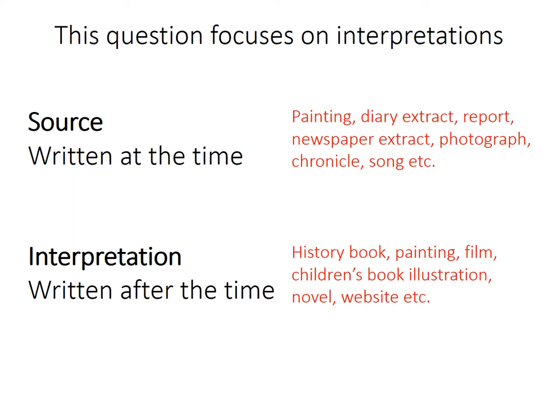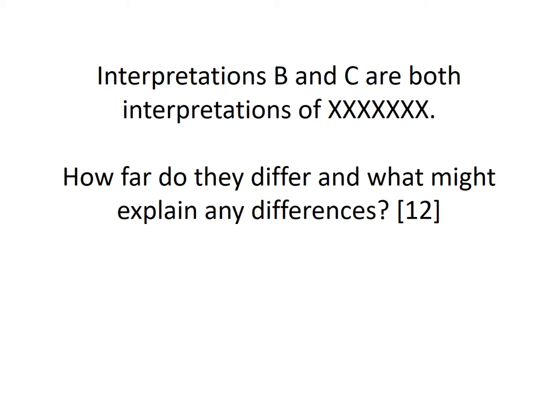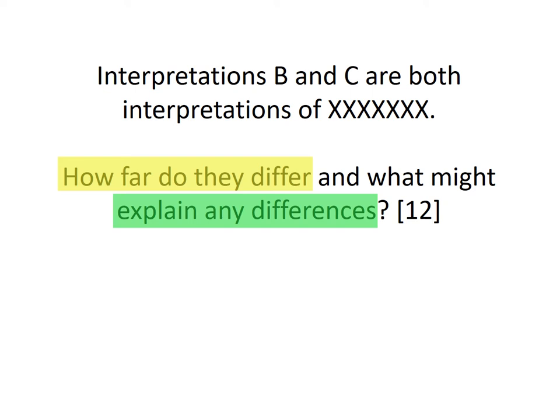Let's focus on this question and the interpretations at hand. The question will always be phrased as: 'Interpretations B and C are both interpretations of...' and they'll give you a topic — it could be Norman castles, the Battle of Hastings, Hereward the Wake, or the Domesday Book. So there will be two interpretations on the same topic. The key part is: 'How far do they differ and what might explain any differences?' This question is asking you two things: how they differ and why they differ. That's really important — how they differ and why they differ.